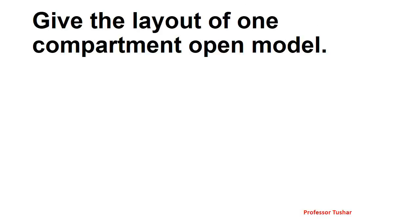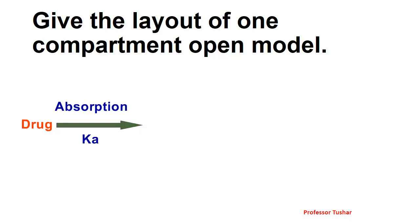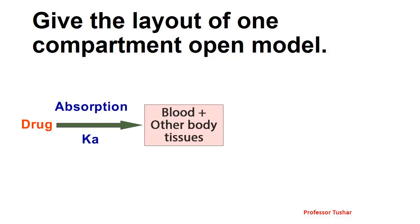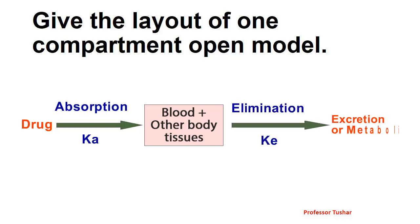Give the layout of the one-compartment open model. The drug is absorbed into the blood with absorption rate constant Ka, and distributed in other body tissues very rapidly. From this single compartment, the drug is eliminated or metabolized with elimination rate constant Ke. This model is called the one-compartment open model, as the drug is absorbed in a single body compartment and from this compartment the drug is eliminated.